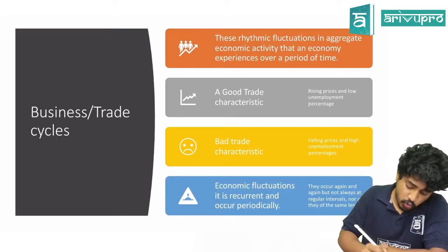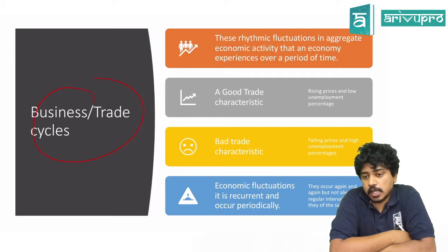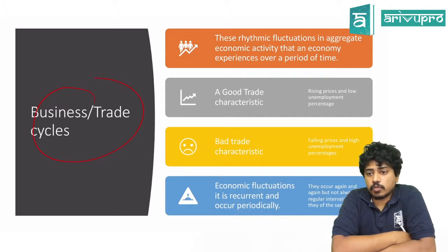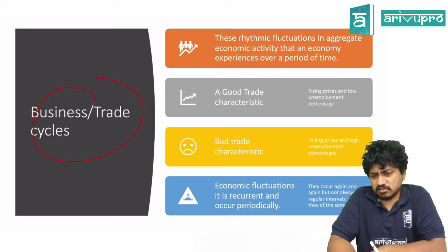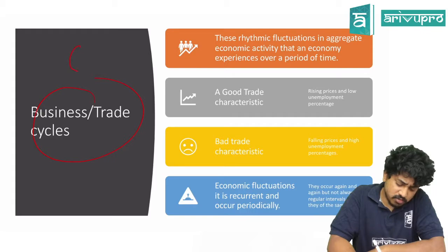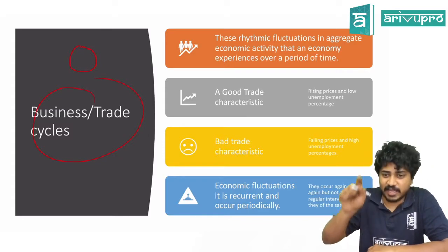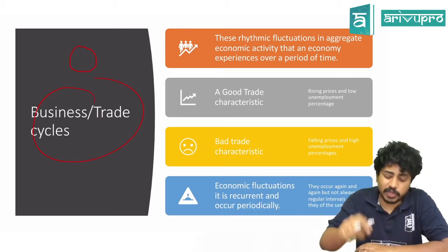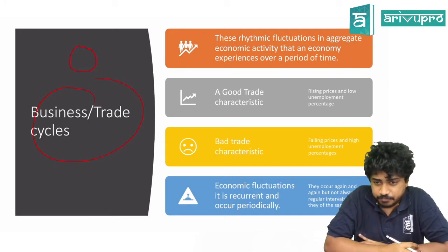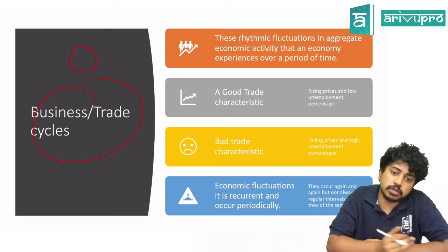The first term you have to understand is business or trade cycle. Everything has its own cycle. A cycle starts at one point and comes back — that's a circle. But the cycle of life, starting then rebirth, is a continuous thing — we call it a cycle. Business also goes through a cycle.